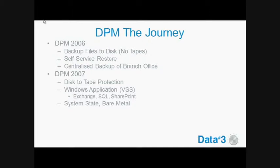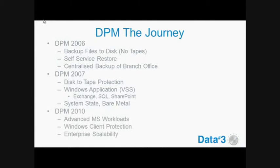So in 2007, disk to tape protection came out. Now you could get those files from your branch offices back to your central office and back them up to tape as well. Microsoft also started to focus on enabling detailed backups of your Windows applications — your Exchange, your SQL, and your SharePoint. System state backups for your servers were introduced, and bare metal recovery.